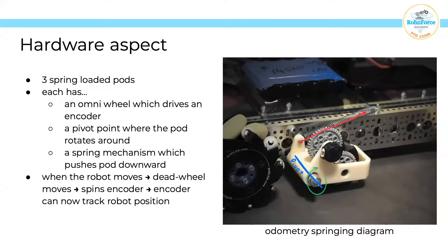On the odometry pod case, you have a place for a pivot point which the pod rotates around. There's a spring mechanism which pushes the pod downward towards the playing field for even contact. When the robot moves, the dead wheel moves because the spring mechanism forces the wheel down against the surface. In turn, this spins the encoder, and the encoder can track the robot's position. When you combine two or three of these pods together, you'll be able to track the X and Y heading of your robot.